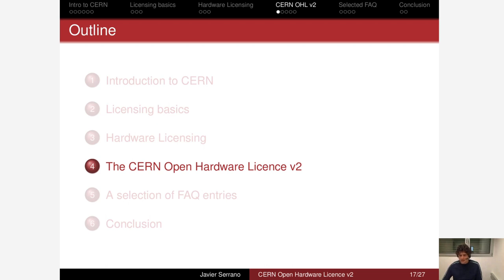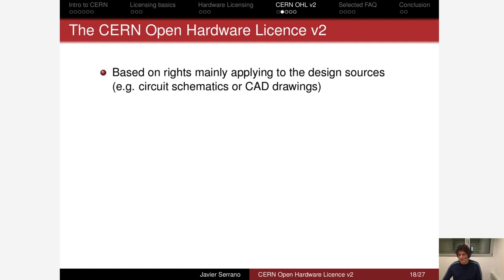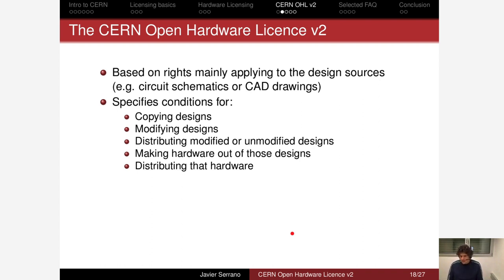Now let's go to the CERN Open Hardware License. The mechanism used by the license is mostly based on rights that apply to the design sources — for example, circuit schematics and layouts in the case of electronics, or cut drawings in the case of mechanics. These are what a designer edits in the early stages of the cycle that ends with manufacturing a product. The license specifies conditions for copying, modifying, and distributing designs — both modified and unmodified — but also, and this sets it apart from software, on making hardware based on those designs and distributing that hardware.